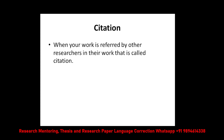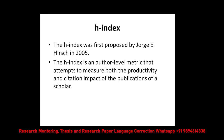Citation is the basis to decide the metric H-index. The H-index was first proposed by George E. Hirsch in 2005. It is an author-level metric that attempts to measure both the productivity and the impact of the publications of a particular scholar, because they wanted to check whether what you have published has created an impact or not.